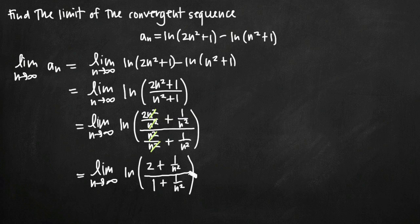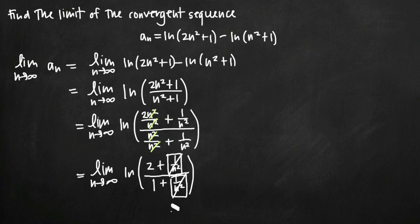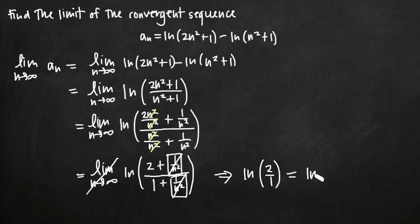The reason this is convenient is that when we take the limit as n goes to infinity and plug infinity in for n, these individual fractions with a constant in the numerator and an infinitely large number in the denominator go to 0. So the 1 over n squared terms both disappear, our limit notation goes away, and all that we're left with is the natural log of 2 over 1, which is just the natural log of 2.